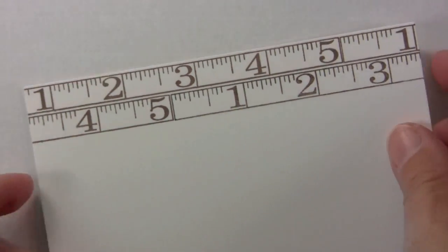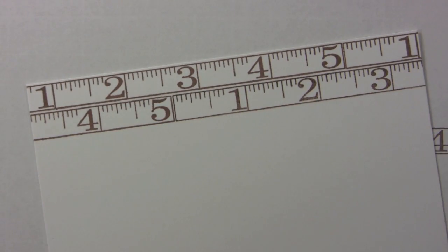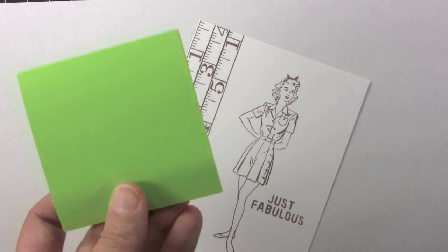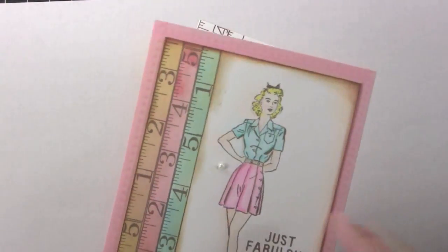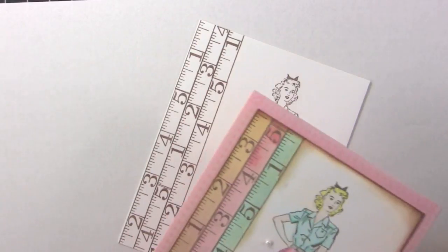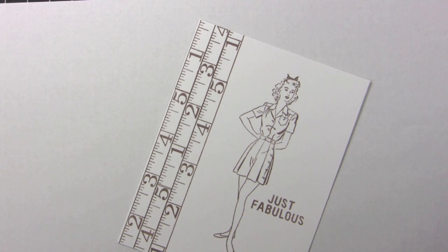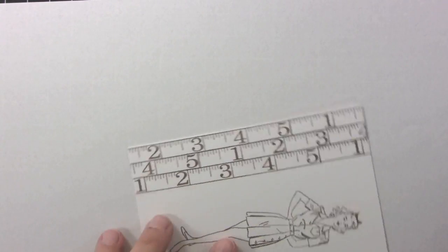So for the sake of time, I'm going to go ahead and finish stamping the rest of the card. The next technique uses post-it notes to get the different colors on the rulers. And this is really easy to do.